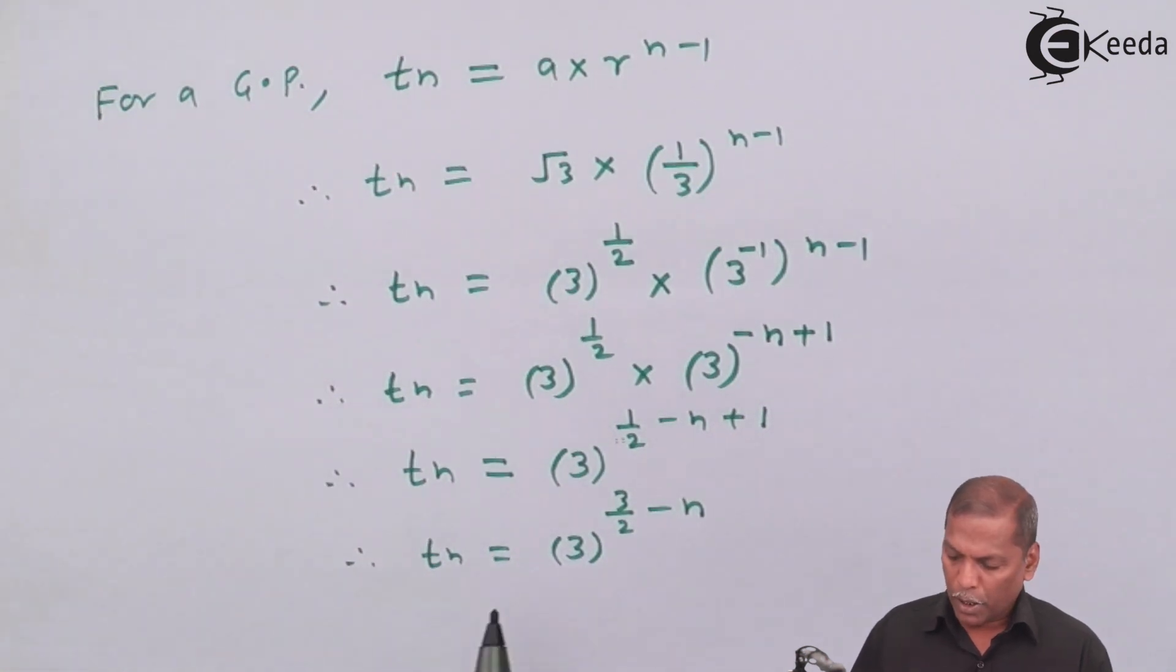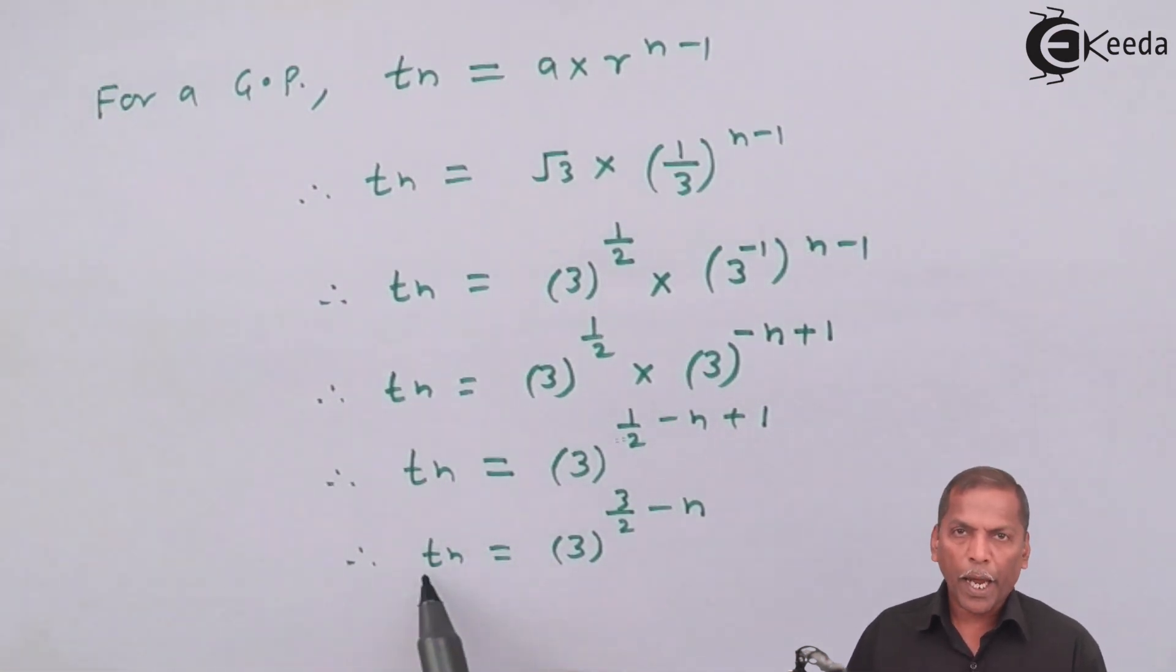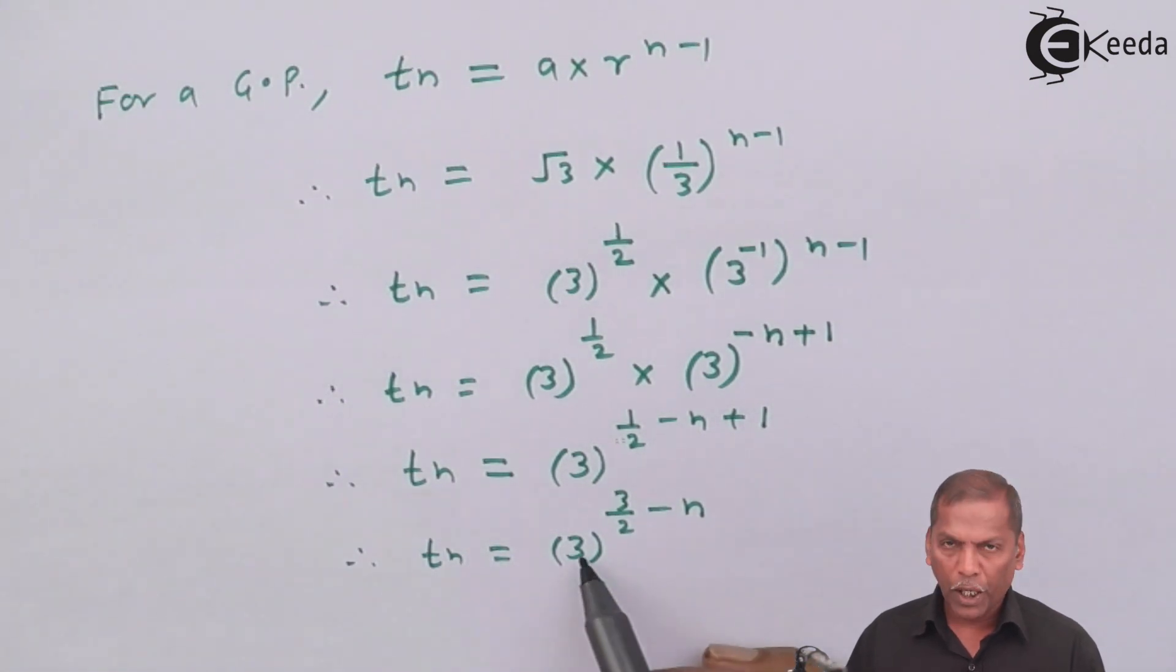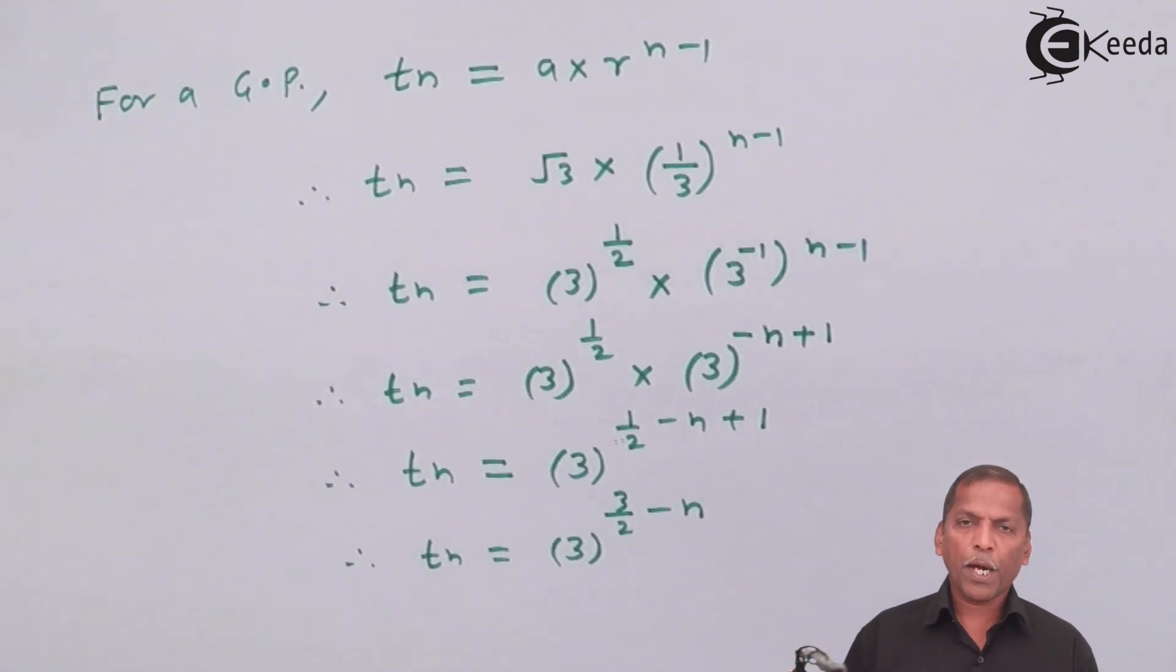So thus, Tn, that is nth term of GP, is given by 3 raised to 3 by 2 minus n. So this is the required solution for the given problem.